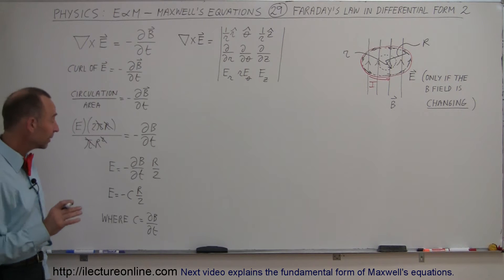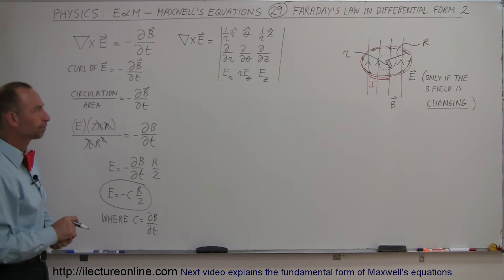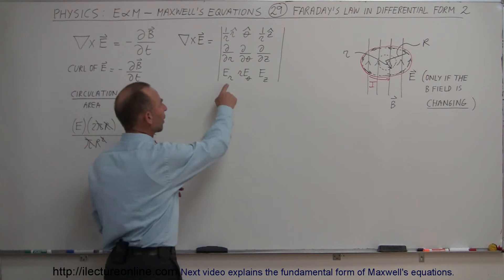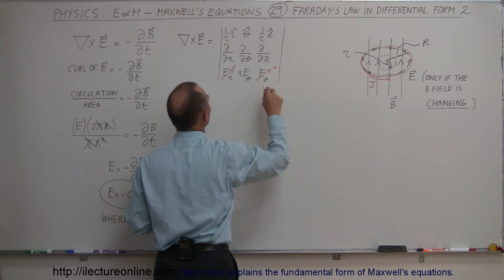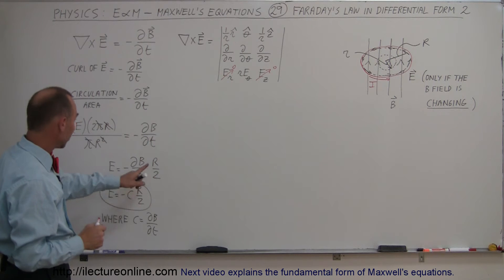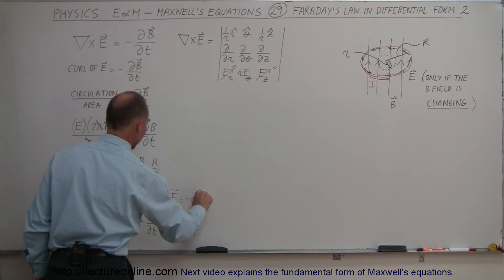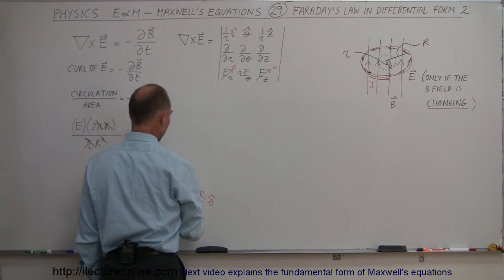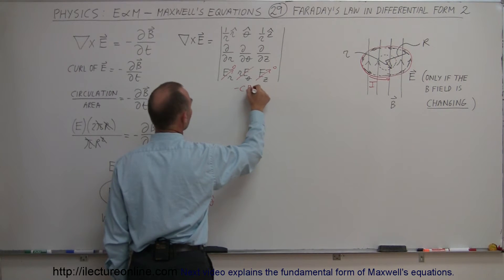Now we should be able to take the curl of the electric field, knowing the electric field equals this expression. First, we note that the electric field in the R direction — the radial direction — is zero, and the electric field in the Z direction is zero as well. The electric field, letting the small r equal the big R to find the field at that location, is directed in the theta direction. So we have only a theta component of the electric field. Multiplying by R, this term becomes minus C R squared over 2.